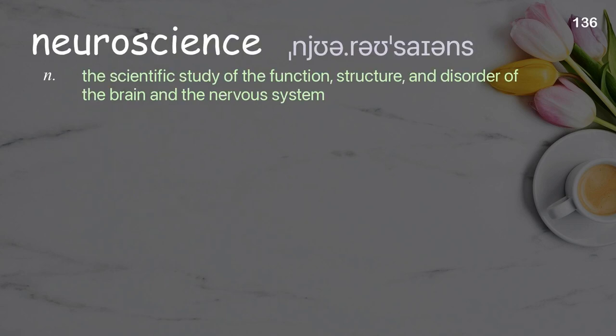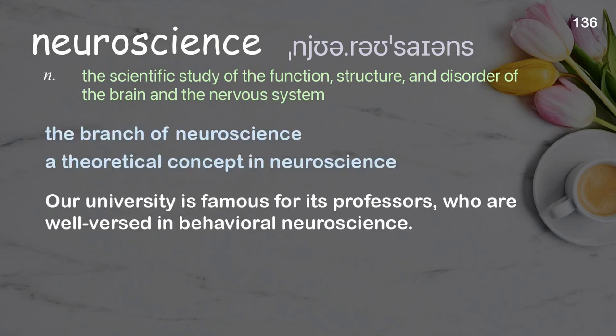Neuroscience. The scientific study of the function, structure, and disorder of the brain and the nervous system. Examples: the branch of neuroscience, a theoretical concept in neuroscience. Our university is famous for its professors who are well-versed in behavioral neuroscience.